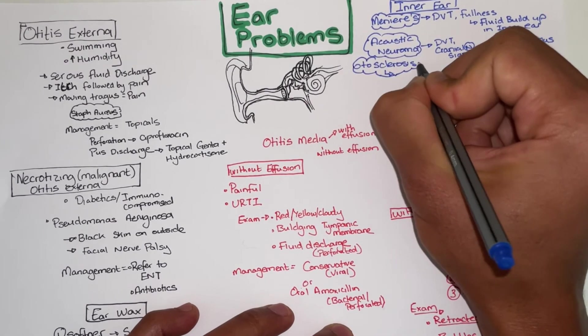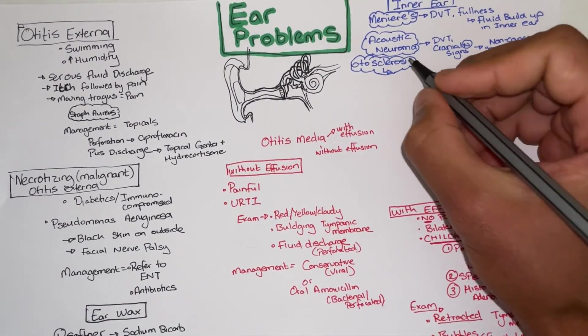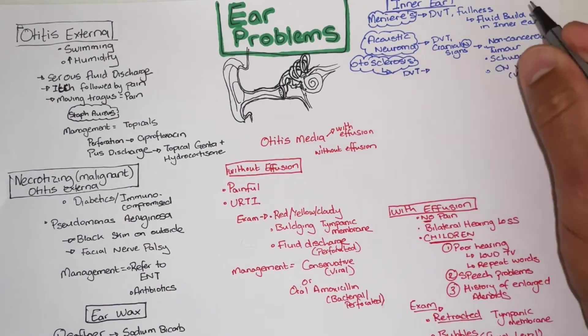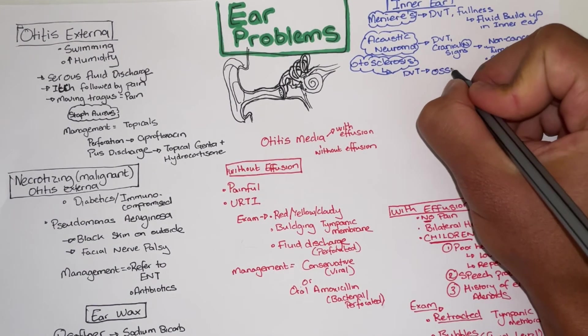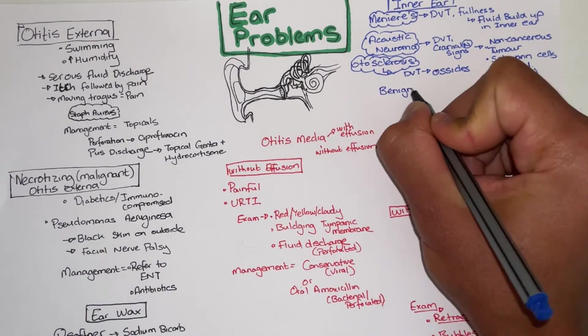Otosclerosis is a problem arising due to poor formation of the ossicles. It is typically seen in young and pregnant patients and you also have the problems of deafness vertigo and tinnitus.